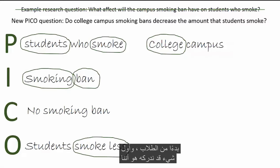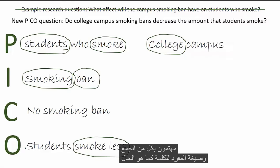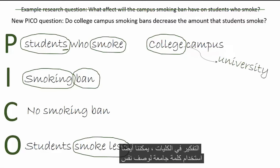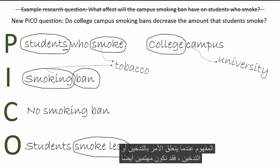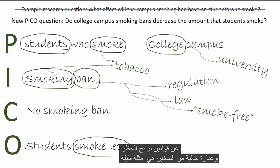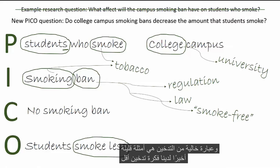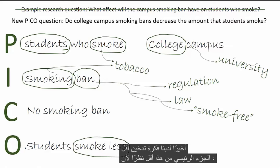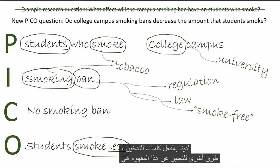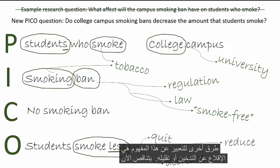Starting with 'students', we may realize we are interested in both the plural and singular form of the word, as is the case with some of our other words. When thinking about colleges, we can also use the word 'university' to describe the same concept. When it comes to smoke or smoking, we may also be interested in tobacco. There are a lot of ways to talk about a ban — regulations, laws, and the phrase 'smoke-free' are a few examples. Lastly, we have the idea of smoking less. The key part is 'less', since we already have words for smoking. Other ways to express this concept are quitting, reducing, or decreasing.